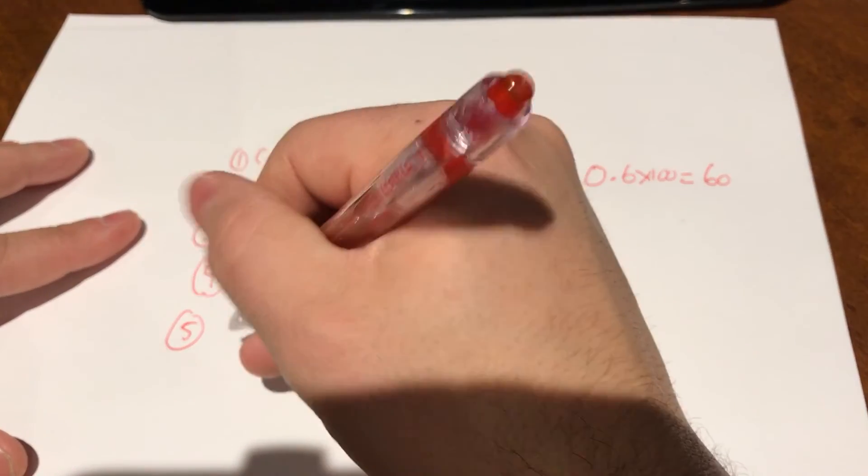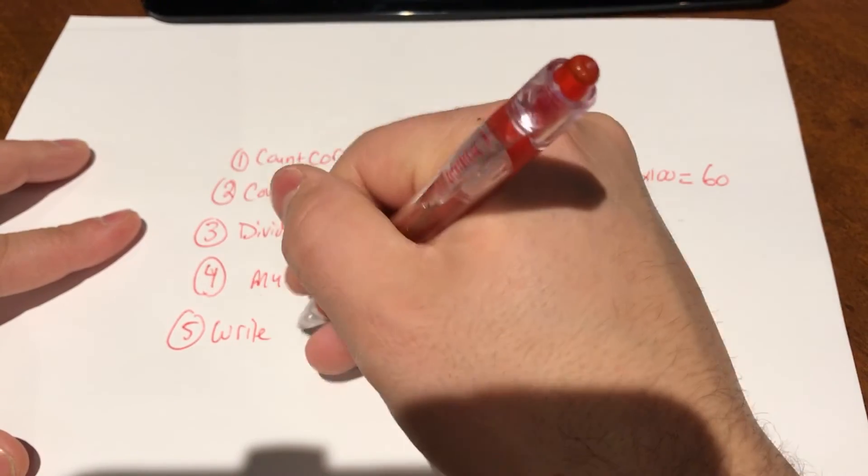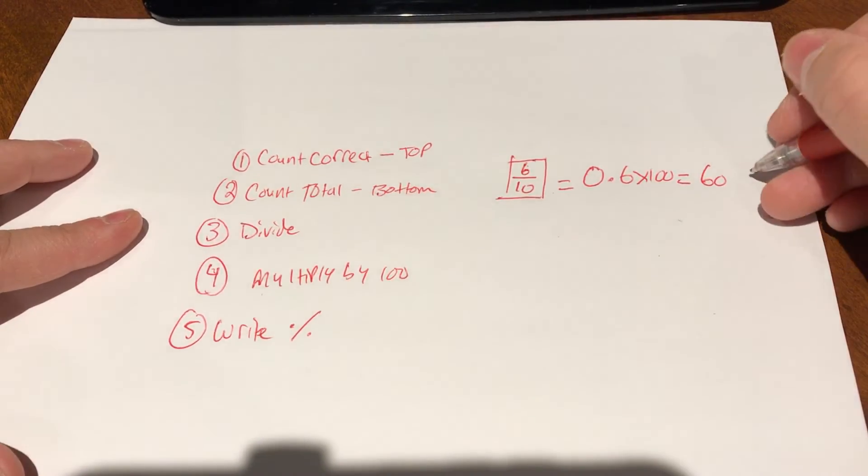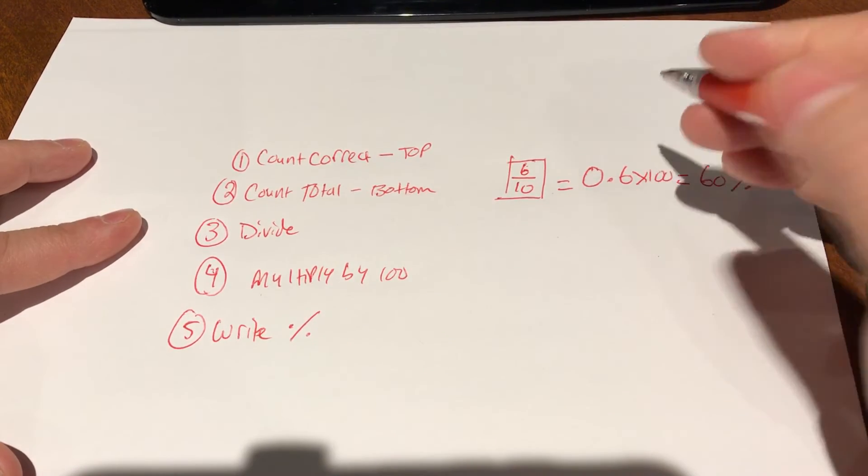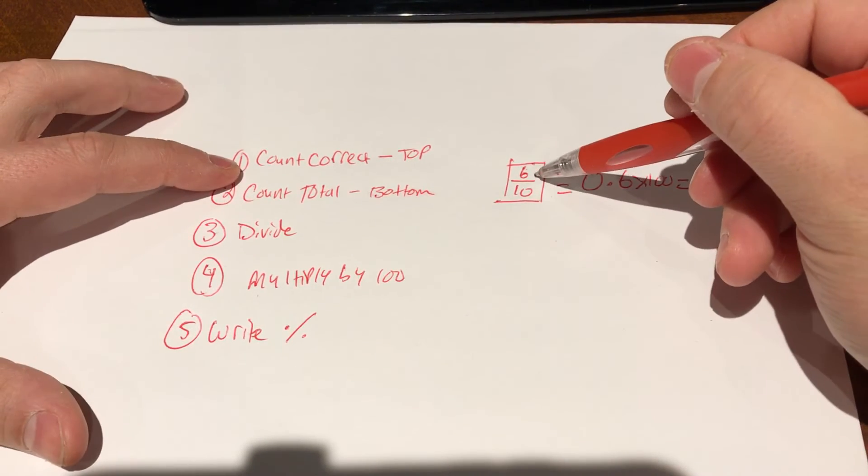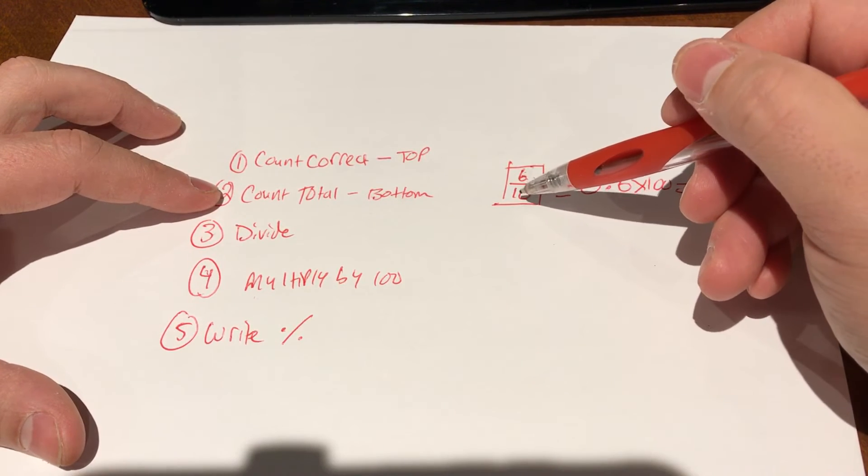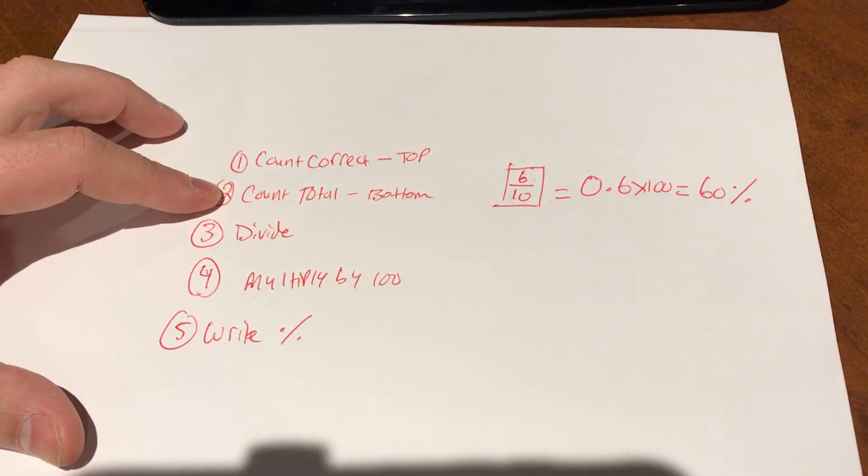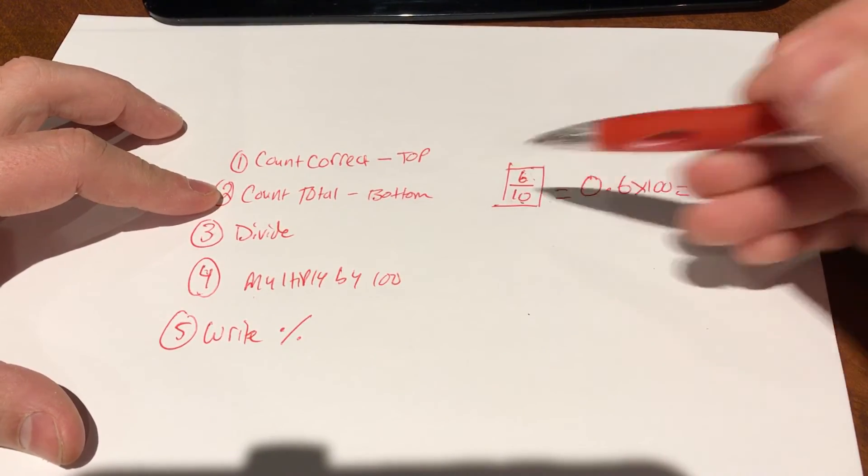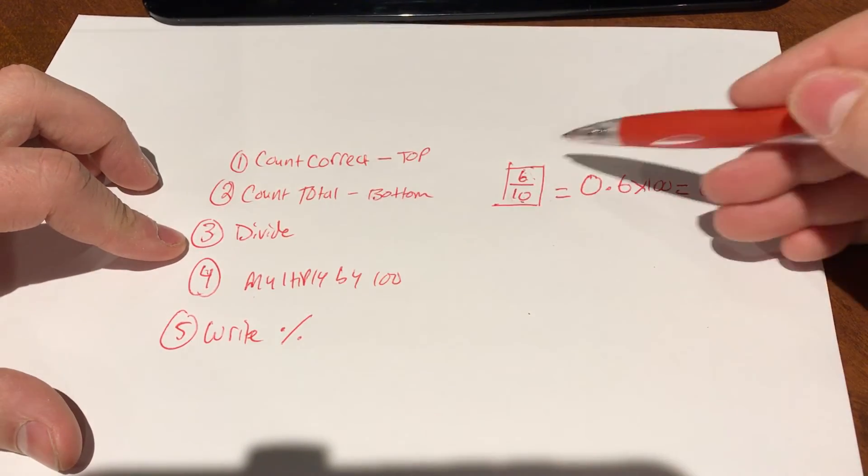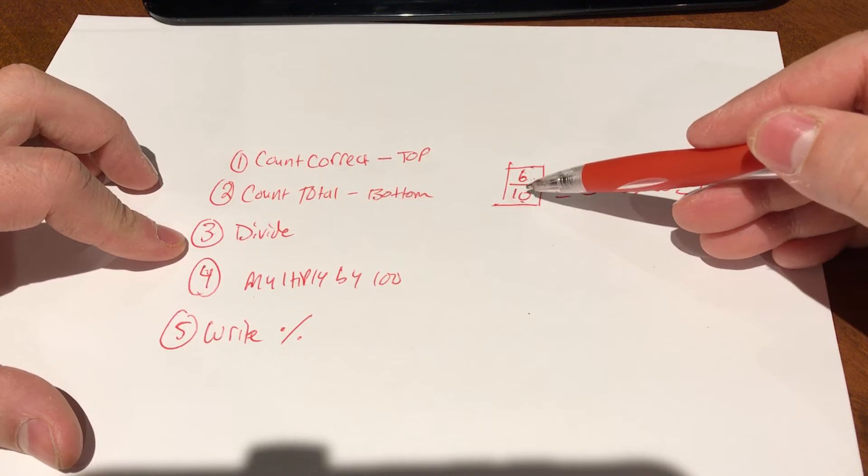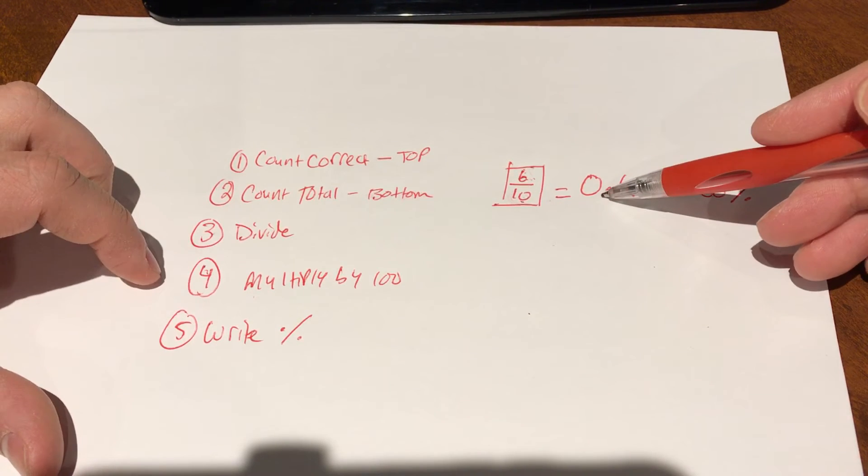And step number five is you're going to write percentage because that is the percentage that you receive. So I'm going to write here percentage. So basically, step number one is count the number of correct answers, six. Step number two is count the total possible marks that you could have received on the test, 10 in this case. Step number three is divide, six divided by 10, so top number divided by bottom number, which is 0.6.